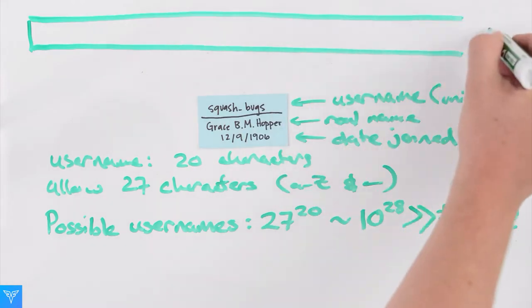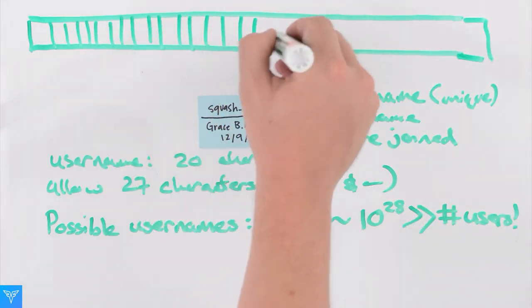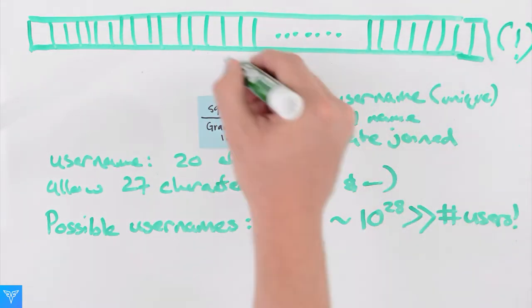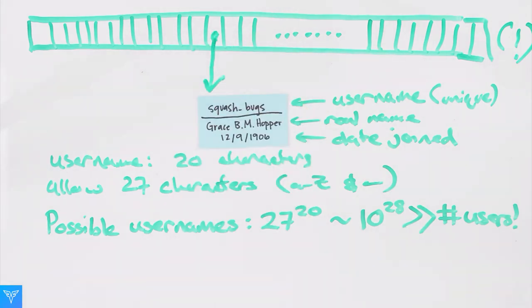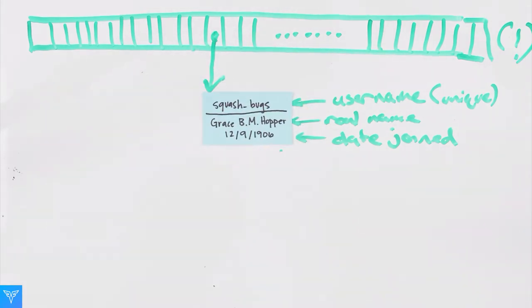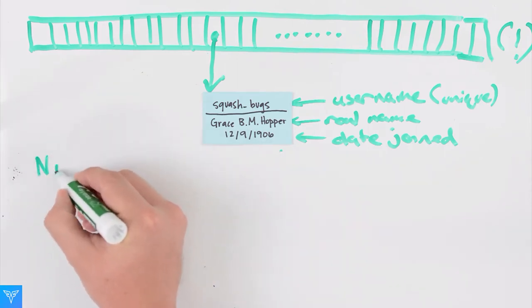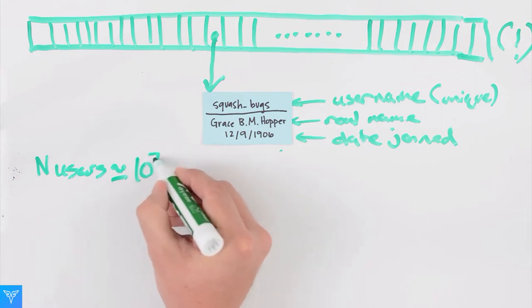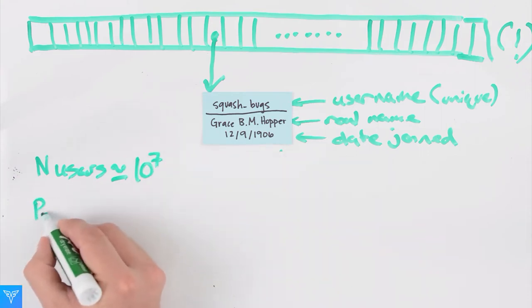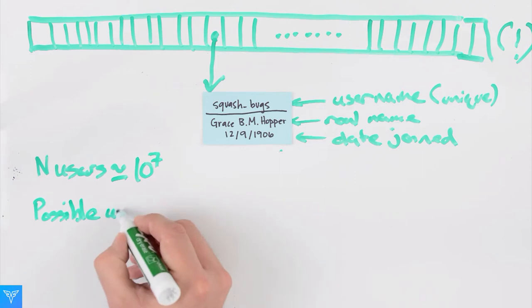A really bad way of storing our users for quick lookup is to make an array of length 10 to the 28. Given a username like SquashBugs, we could figure out the corresponding index in the array and access the information that way. The Codefights user base has some number n of users and this can be pretty large. 10 million entries isn't unreasonable for a database. However, this is tiny compared to the universe size of 10 to the 28 possible usernames.